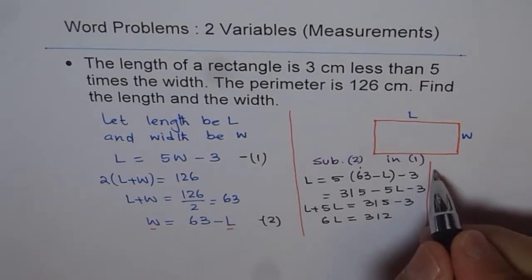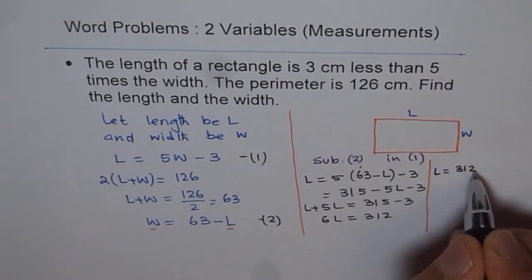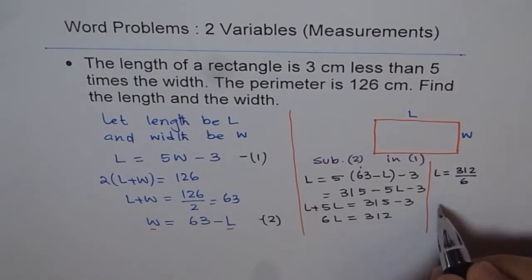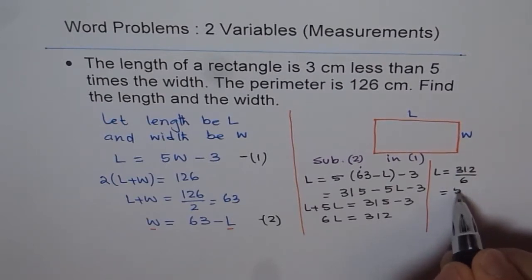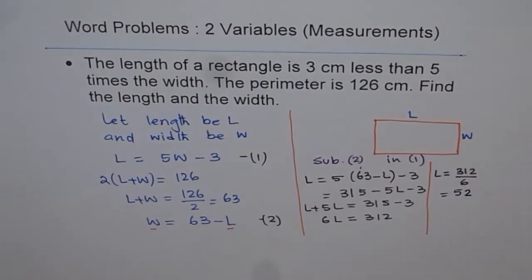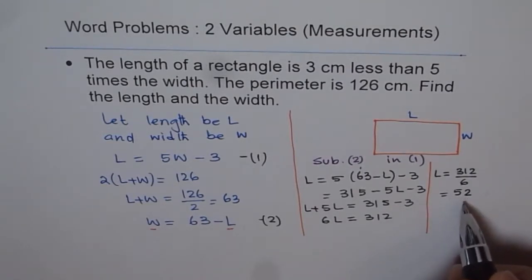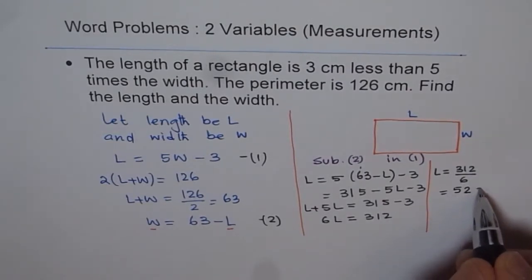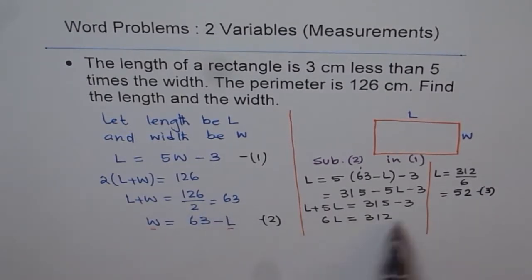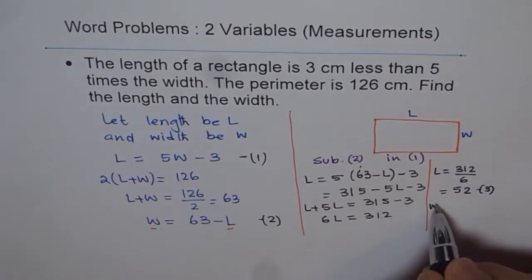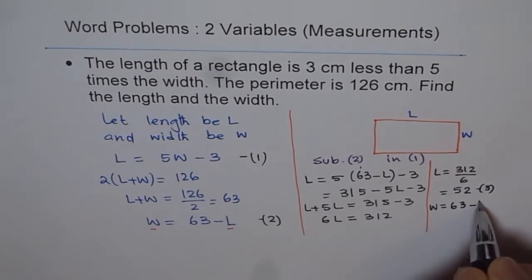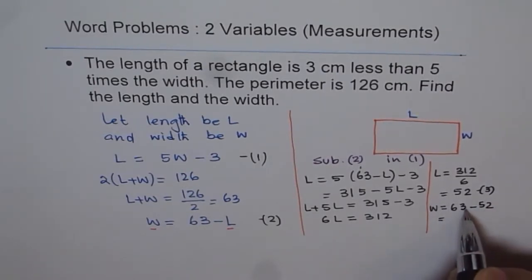So length L is equal to 312 over 6. That gives us 6 times 5 is 30, so we get 12, 2. So length is 52. Now if length is 52 what is the width? Let's call this equation 3. We can find the width from equation 2. Let's substitute 52 here and get width. So width should be equal to 63 minus 52. That gives us 11. So we have width of 11 in this particular case.